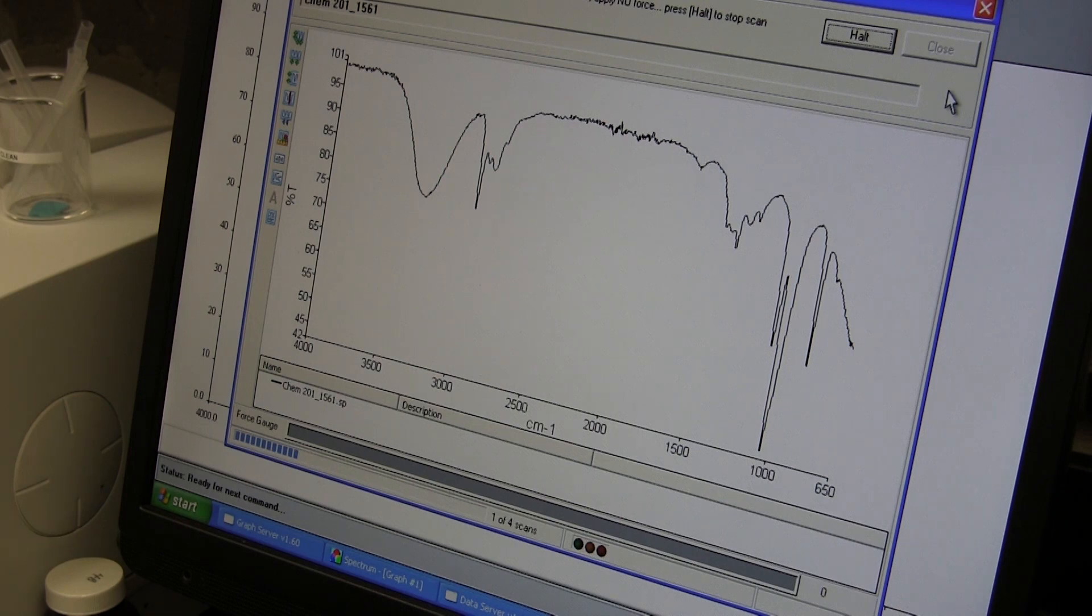Here we see a spectrum being collected on one of our FTIRs. We can see that some frequencies are absorbed more than others, depending upon which bonds or functional groups are present in the sample.